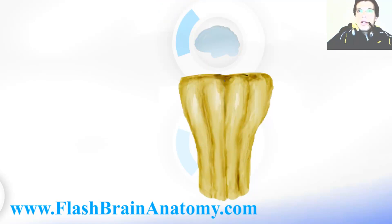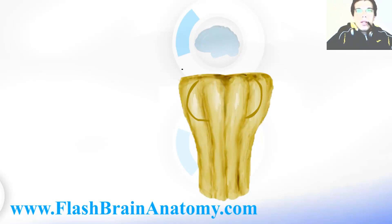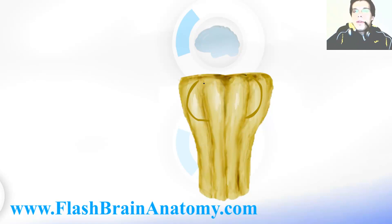Those two pyramids are separated by the median fissure in the middle. And then we have these round bodies, a bit more lateral from the pyramids. They are called the olivary bodies — elevations made by the olivary nuclei inside. The olivary bodies are separated from the pyramids by the anterolateral sulcus, here and there. This was the median fissure.